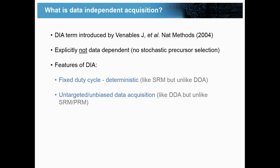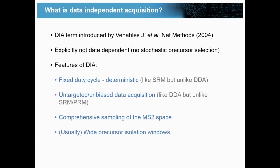DIA involves untargeted and unbiased data acquisition — you don't have to feed it a target list. So this is like DDA but unlike SRM. Usually the aim is to have comprehensive sampling of the precursor space with MS2 spectra. In order to achieve this comprehensive sampling, we implement a method that requires wide precursor isolation windows. This usually leads to very complex mixture MS2 spectra because you're co-isolating multiple precursors in the same precursor isolation window.